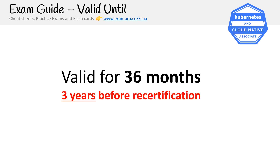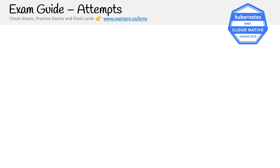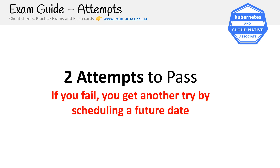This exam is valid for three years, or 36 months, before recertification. You get two attempts to pass — if you fail, you get another try by rescheduling a future date. I actually failed my first attempt because I knew I had two attempts, so I sat it without a single bit of study and got 74%, which shows how much cloud knowledge carries over. You're paying for two attempts, so you should use them. If you want to fail it intentionally to get a sense of areas to brush up on, that's totally fine.